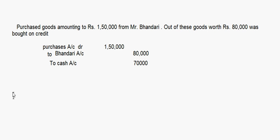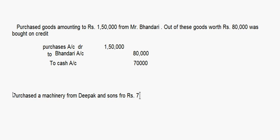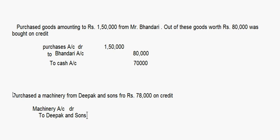Purchased a machinery from Deepak and Sons for rupees 78,000 on credit. This is a machinery purchase, so machinery account is debited and since it is a credit purchase, we write to Deepak and Sons account — 78,000.